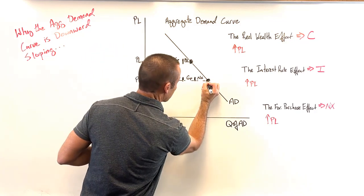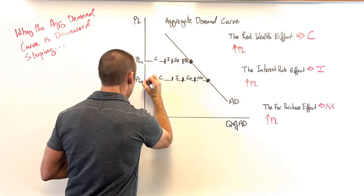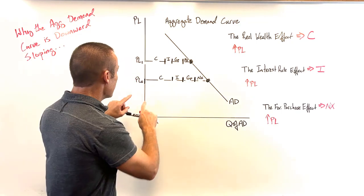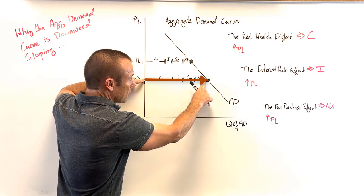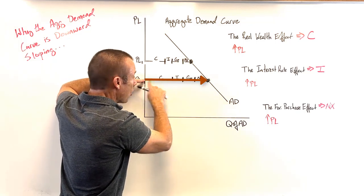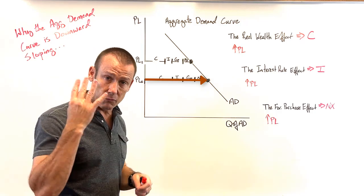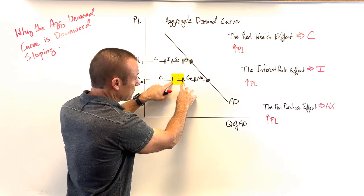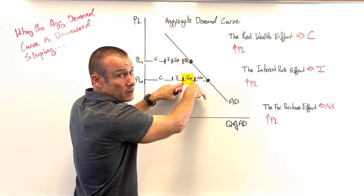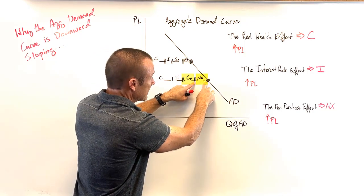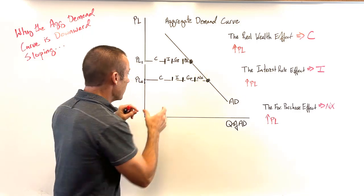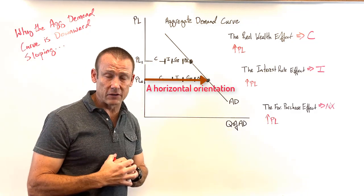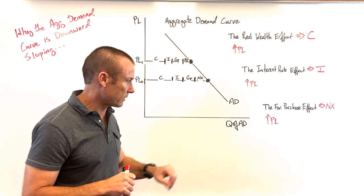Let's look at just one point on the graph. At this price level, that is our total aggregate demand — total spending on goods and services — made up of four components: some amount is consumption (household spending), some is investment (business spending), some is government purchases, and some is net exports. You can see the horizontal orientation to the graph.